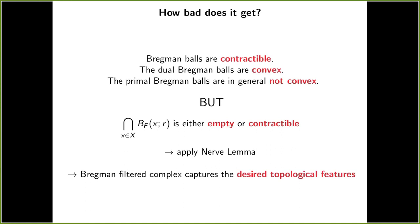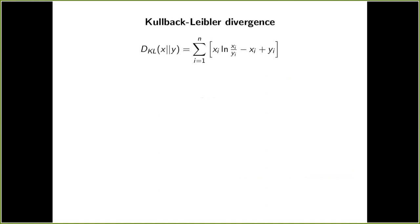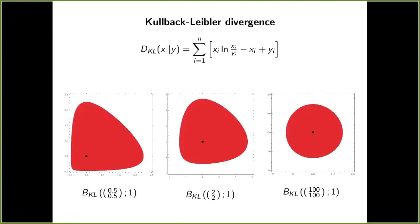As a last part of this tutorial, I would like to show you two widely used Bregman divergences and briefly comment on the shape of their primal Bregman balls. So first of all, we have the Kullback-Leibler divergence, which is widely used in text and image processing. And the primal Bregman balls of this divergence are actually convex.